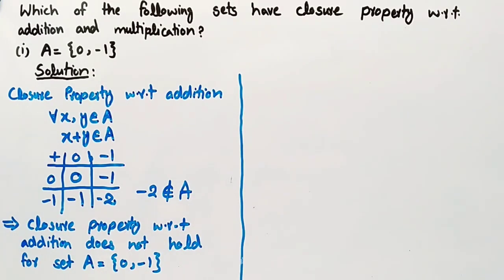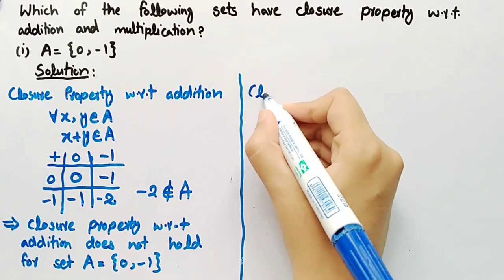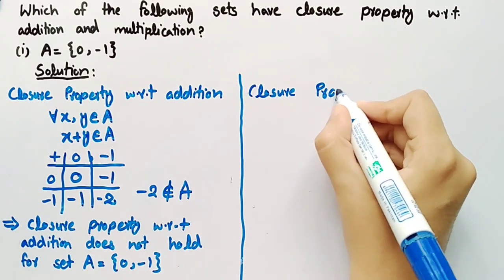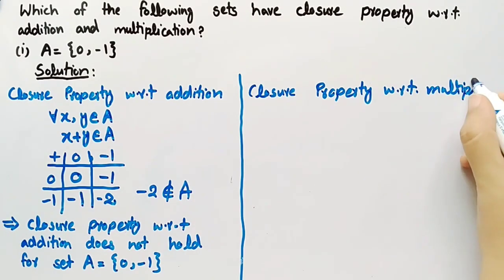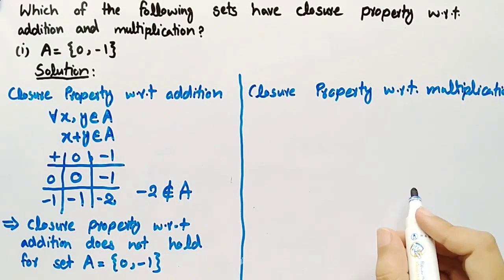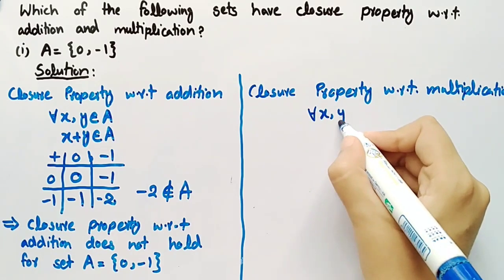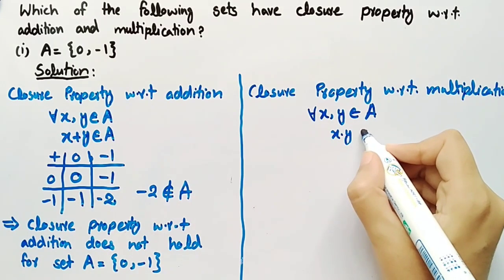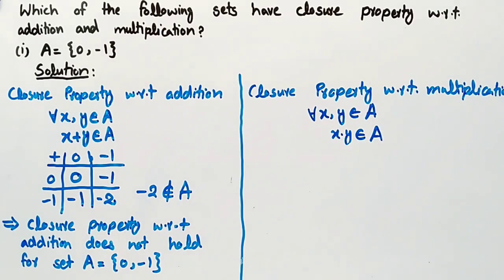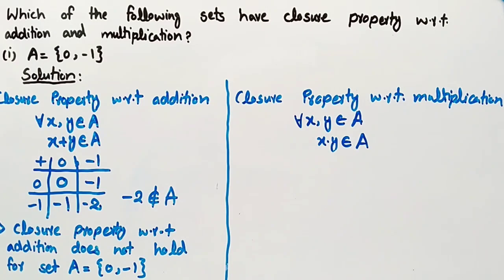Now we will check closure property with respect to multiplication. Its definition is: for all x, y belonging to set A, x · y (the product of x and y) must also belong to set A. It means that whenever we multiply each element of set A one by one with each other element of set A, its product must also be in set A. Then we can say that closure property with respect to multiplication holds for set A.